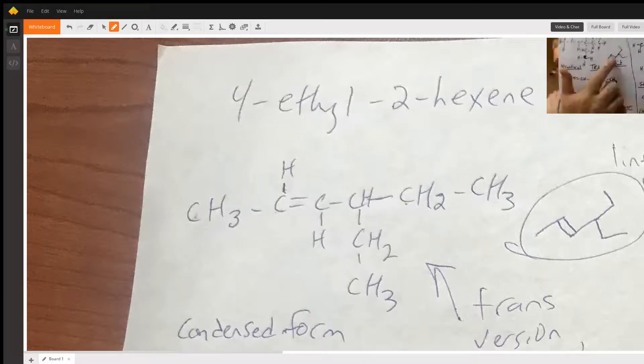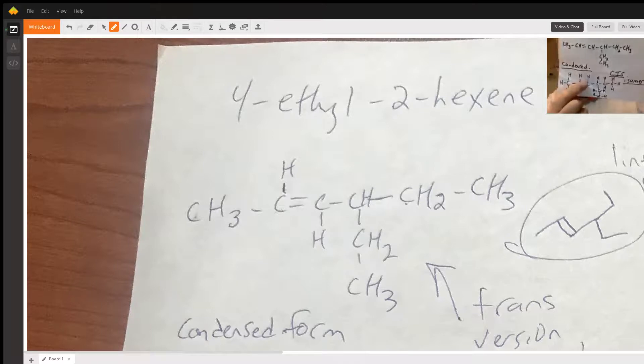Now, if we want the stick figure drawing of it, it looks like this. If we want, we can change the hydrogens on the double bond, and that will give you the isomer, which is a cis version of it.